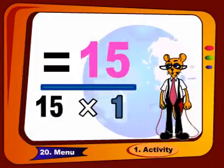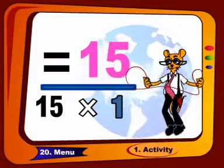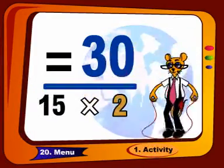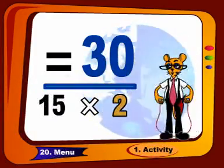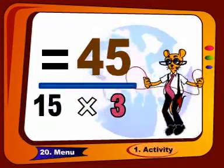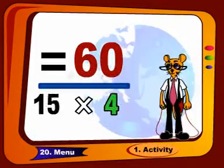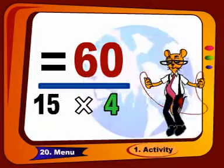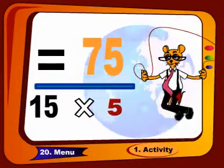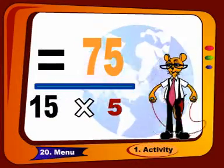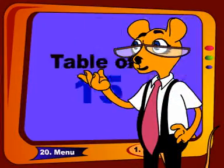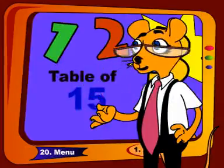15 ones are 15, 15 twos are 30, 15 threes are 45, 15 fours are 60, 15 fives are 75. Now we will complete the remaining table.